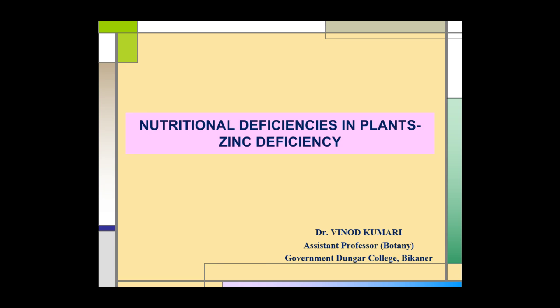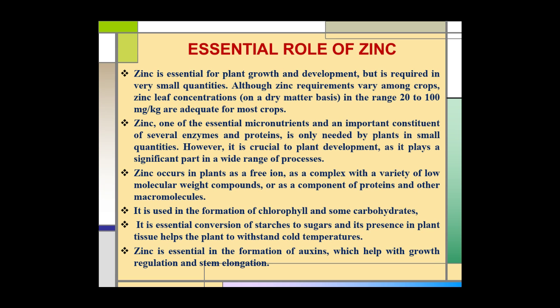Zinc is essential for plant growth and development, but it is required in very small quantities. The requirements of zinc vary among crops. Zinc leaf concentrations in the range of 20 to 100 mg per kg are adequate for most crops. Zinc is one of the essential micronutrients and an important constituent of several enzymes and proteins, and it is crucial for plant development as it plays a significant role in a wide range of processes.